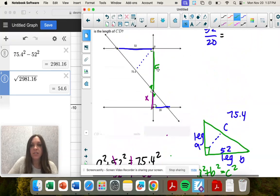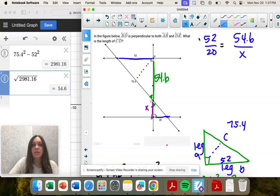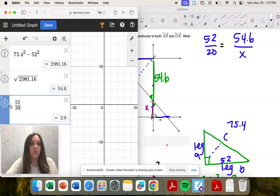So this is 54.6. And now that's going to align my corresponding side with X. See how those are corresponding? 52 over 20. I'm going to reduce that to get a smaller number. It's 13 fifths.